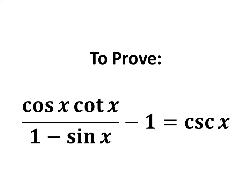In this video, we will learn to prove the trigonometric identity: cosine of x times cotangent of x, upon 1 minus sine of x, minus 1, is equal to cosecant of x.